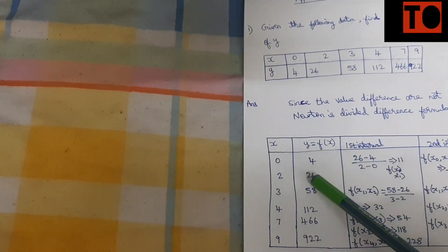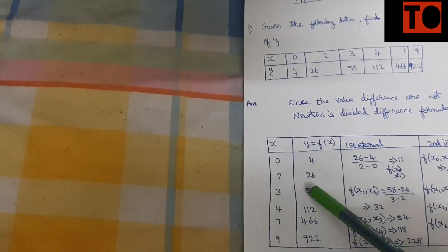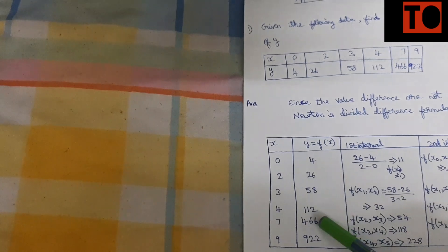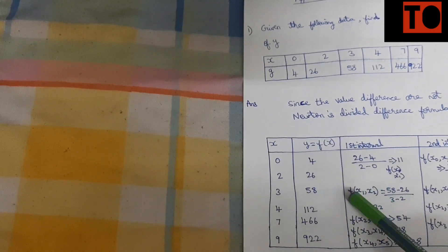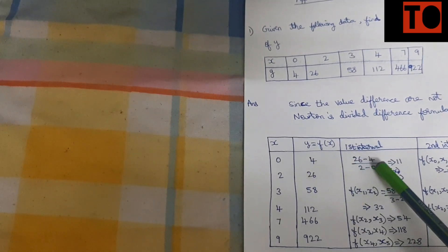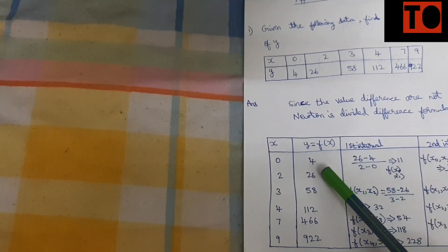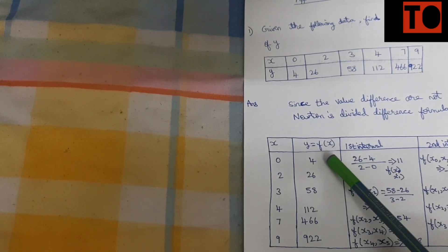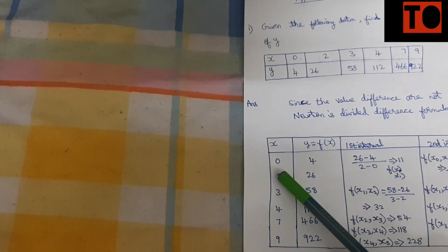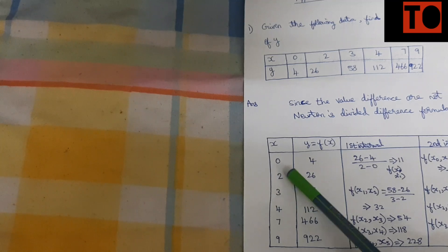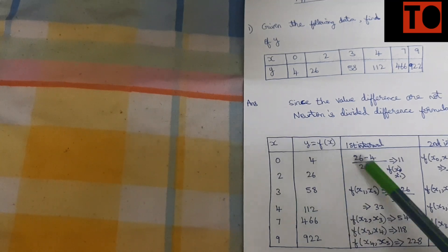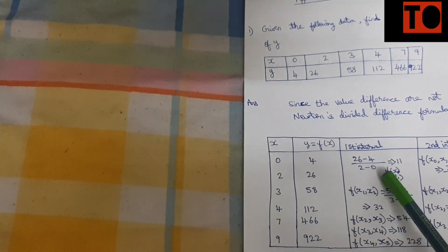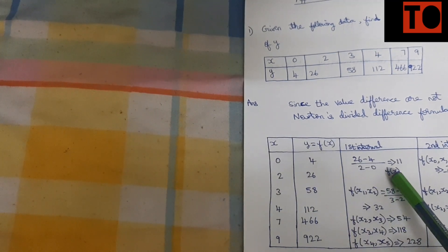In the table, we label y0, y1, y2, y3, y4, y5 for the function values, and x0, x1, x2, x3, x4, x5 for the x values. The first interval column is computed as y1 minus y0 divided by x1 minus x0, and so on for subsequent pairs.